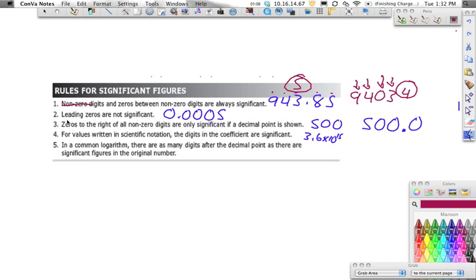On the next rule, it says that leading zeros are not significant. In this case, we're looking at zeros in the front. So all of these zeros are not significant, and this number only has 1 sig fig because that 5 is a non-zero digit.